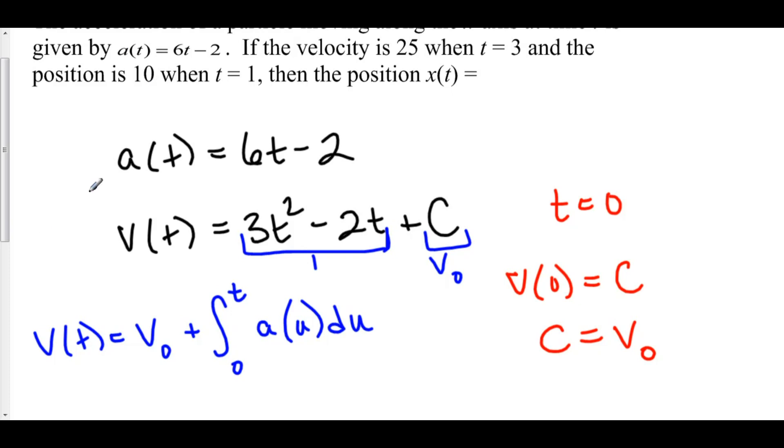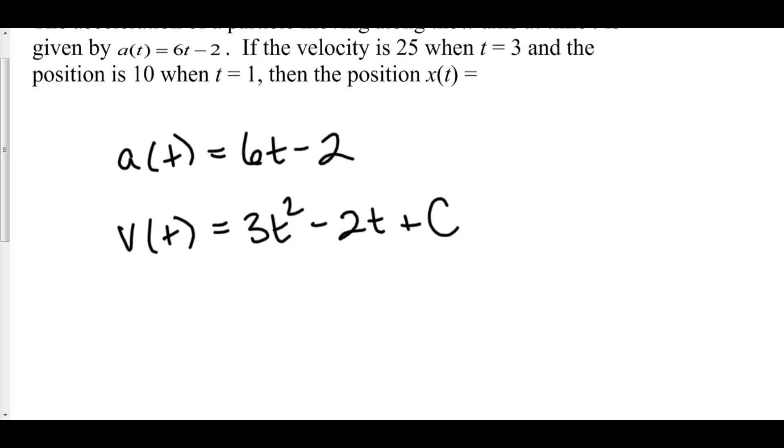So let's keep going along this problem. In this problem, they told us that velocity is twenty-five when t equals three. That is some initial condition for velocity, so let's plug that in right now.